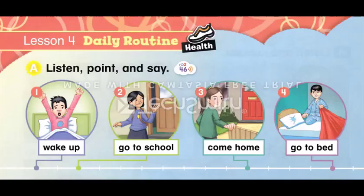Page 64. Lesson 4: Daily Routine. Section A — Listen, point, and say. 1. Wake up. 2. Go to school. 3. Come home. 4. Go to bed.